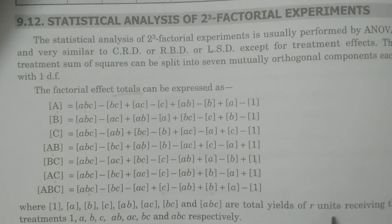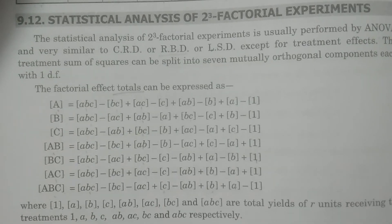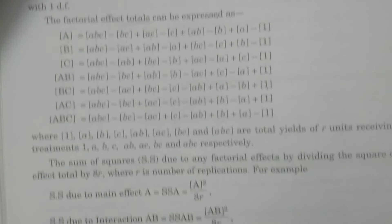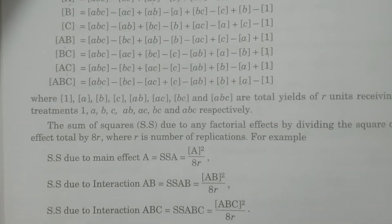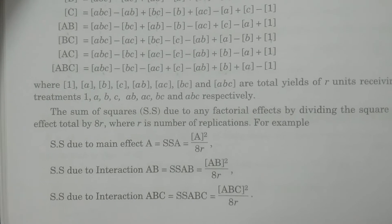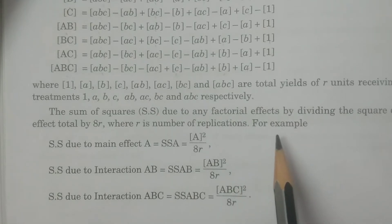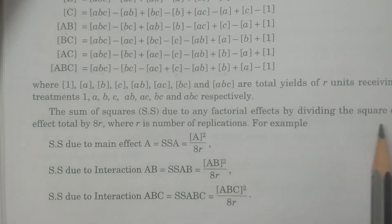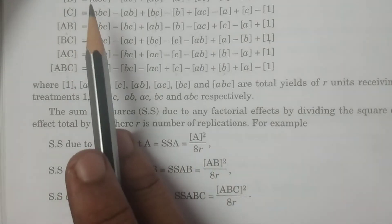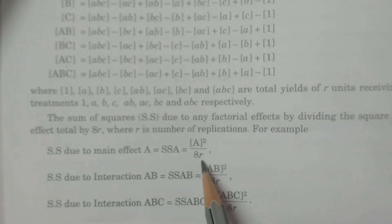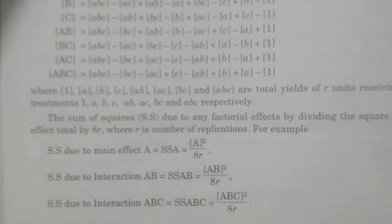By applying R units receiving the treatments 1, A, B, C, AB, AC, BC, and ABC respectively, the effect totals are obtained. Now come to the sum of squares — this is also an important part. The sum of squares is calculated by dividing the square of the factorial effect total by 8R.